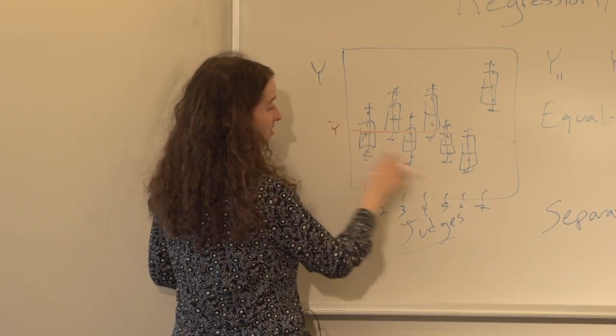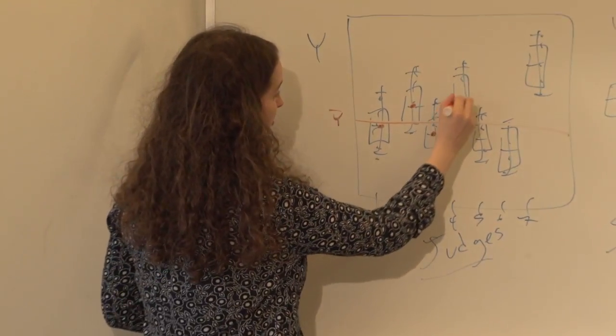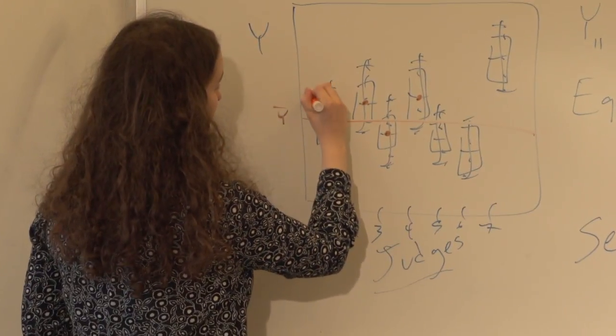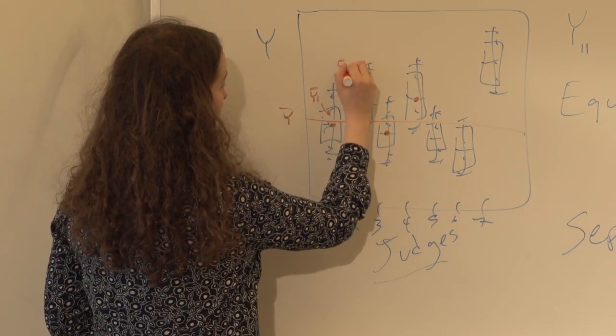Whereas the estimate for the separate means will be different for each group. So this is y bar 1, and this is y bar 2, etc.